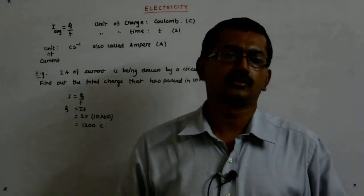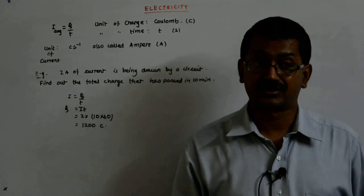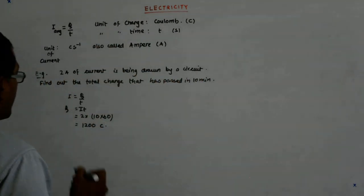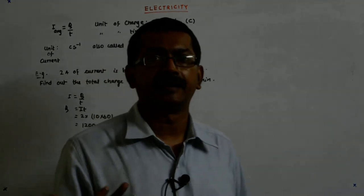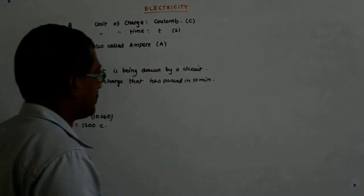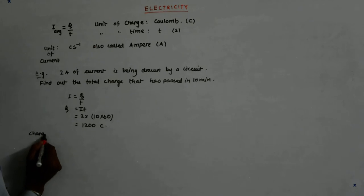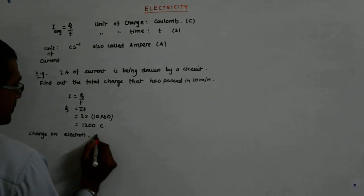1200 coulombs of charge passes just in 10 minutes. Now why am I saying so? Because let us try to understand how many electrons will be there in 1 coulomb. What is the charge on an electron?